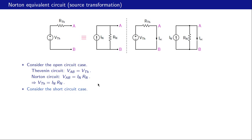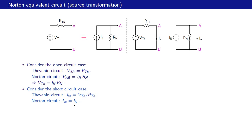Now let us consider the short-circuit case. We connect A and B with a wire and look at the short-circuit current Isc, for both the Thevenin and Norton equivalent circuits. For the Thevenin circuit, Isc is simply Vth divided by Rth. For the Norton circuit, the voltage drop between A and B is zero, so no current flows through Rn and therefore In must flow as the short-circuit current. This gives us Isc equal to In, and since the two circuits are equivalent, these short-circuit currents must be equal.